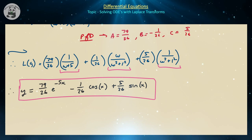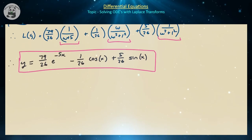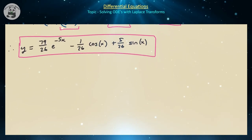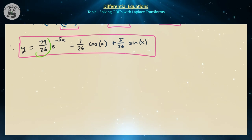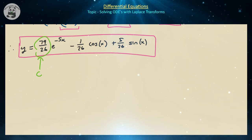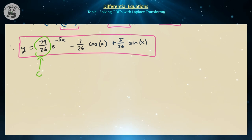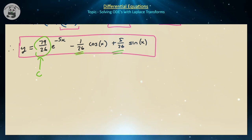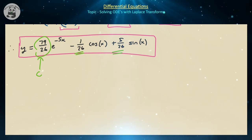Inverting the Laplace transforms, the particular solution is y equals 79 over 26 times e to the minus 5x, minus 1 over 26 times cosine of x, plus 5 over 26 times sine of x. Using integrating factors one can find the general solution, confirming these constants appear across all solutions of this differential equation.